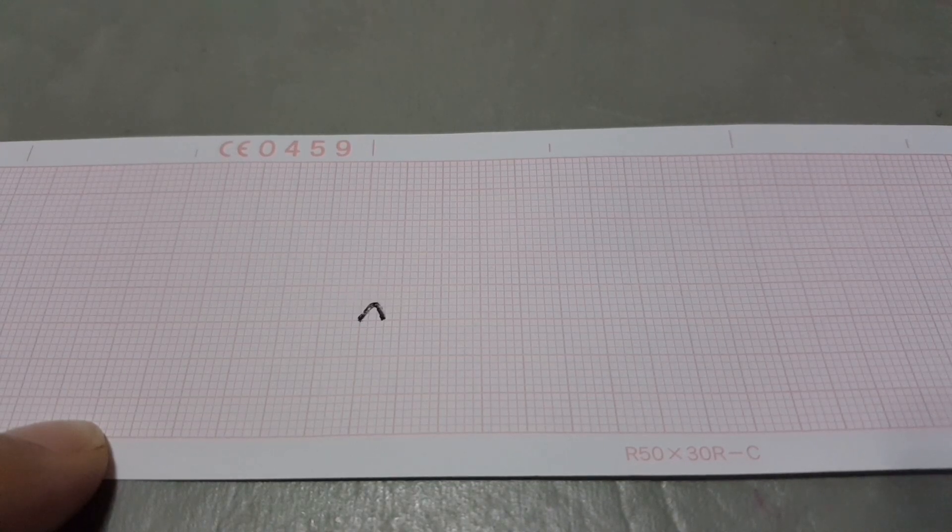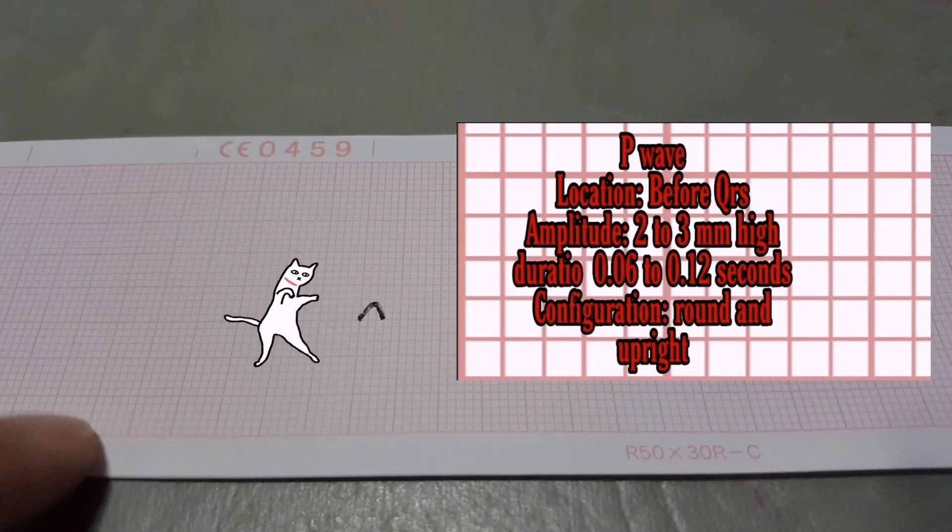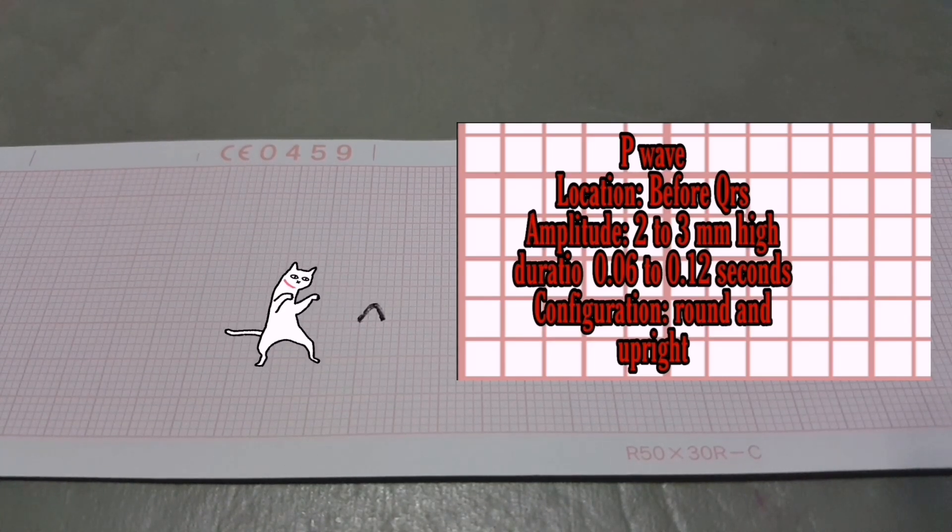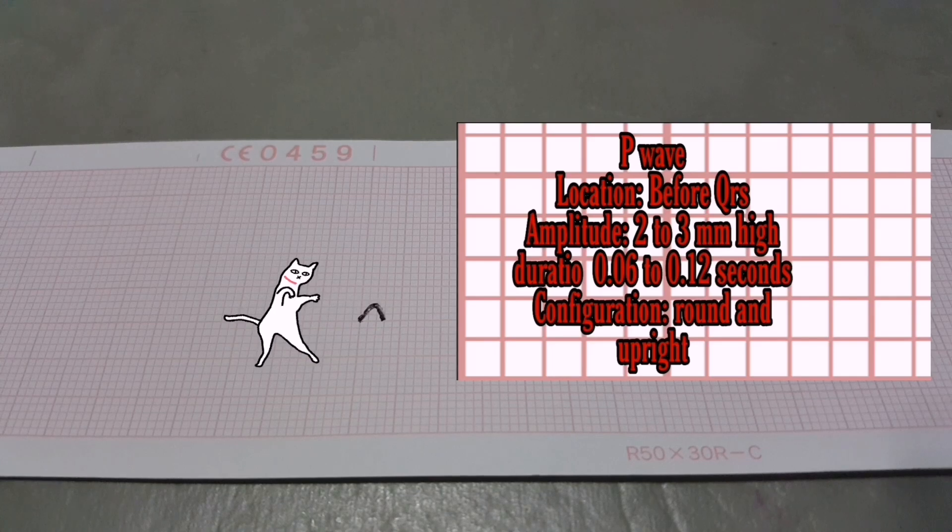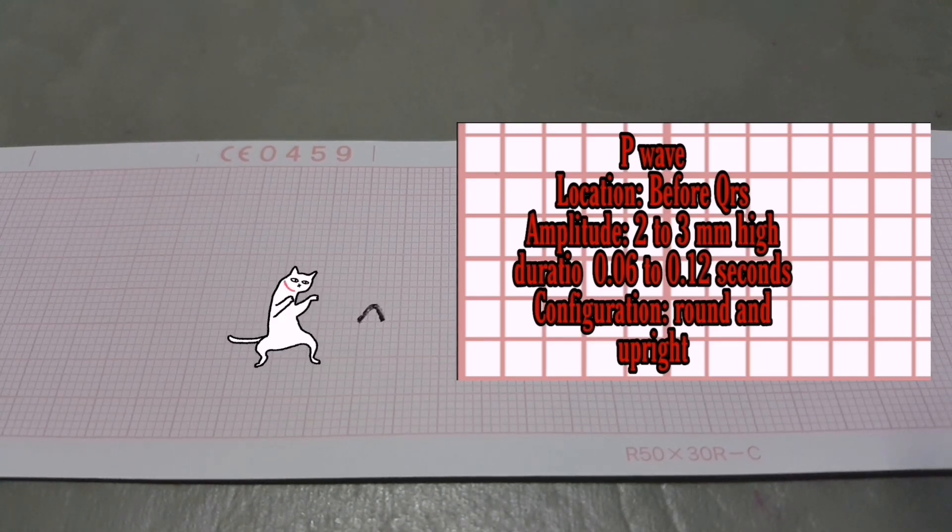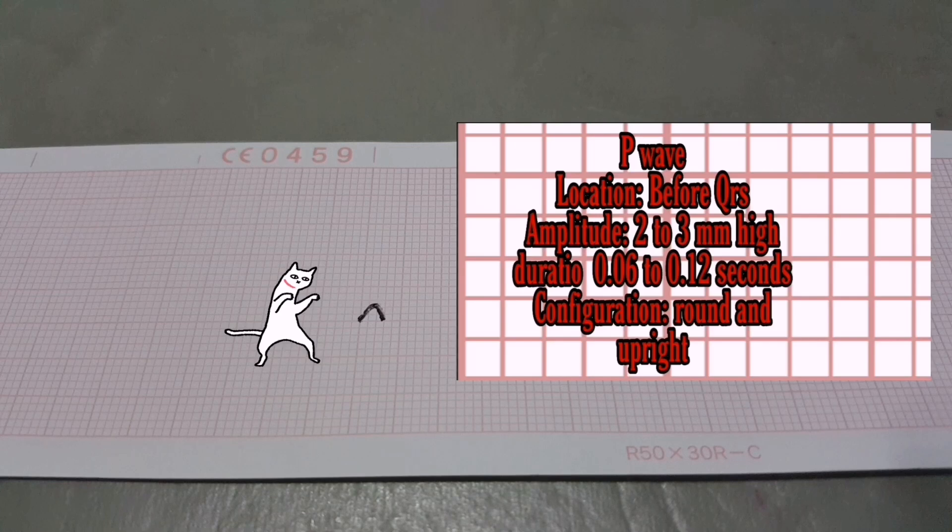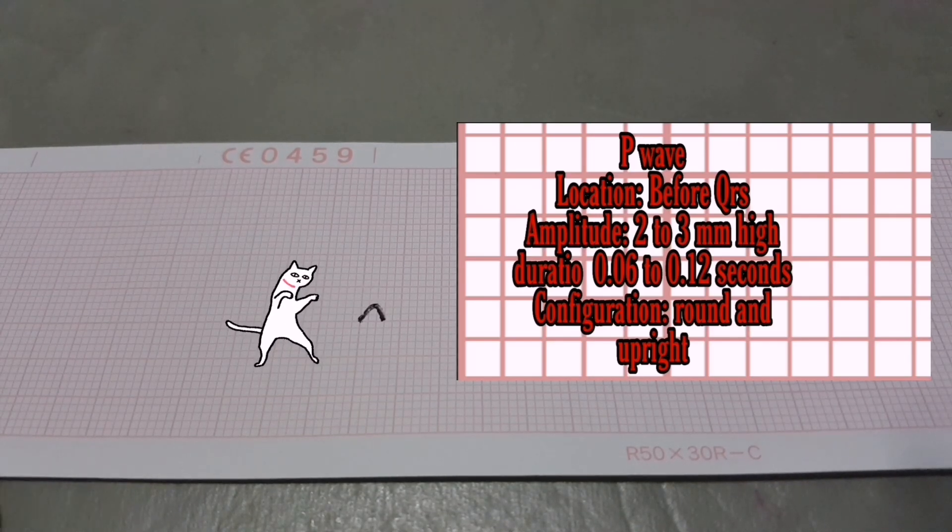The P-wave represents atrial depolarization. It occurs before QRS complex, amplitude 2 to 3 millimeter high or 2 to 3 small boxes high. Duration, 0.06 to 0.12 seconds or 1.5 to 3 small boxes. Configuration, rounded and upright, deflection, upright, or positive in all leads except in AVR.